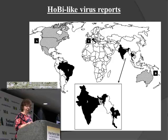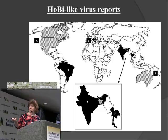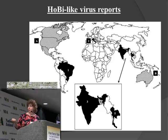There has been a report of Hobi-like virus in fetal bovine serum labeled as originating in the United States, though subsequently we found that anything originating in North America — Mexico up to Canada — is labeled as U.S. origin. There has also been fetal bovine serum originating in Australia found positive for Hobi-like virus.